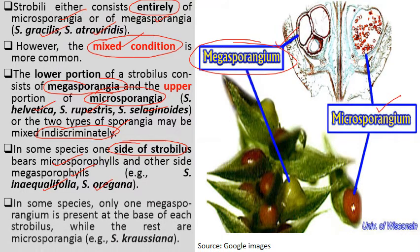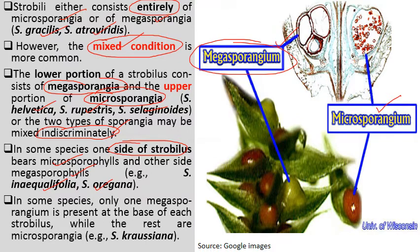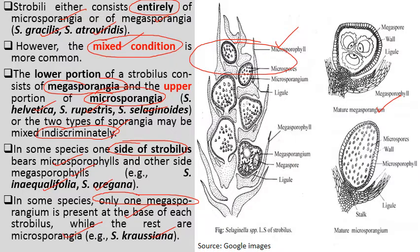In some species, only one megasporangium is present at the base of each strobulus, while the rest are microsporangia. This occurs in case of Selaginella crossiana, where there is a basal megasporangium with all other upper sporangia being microsporangia.